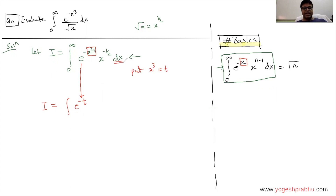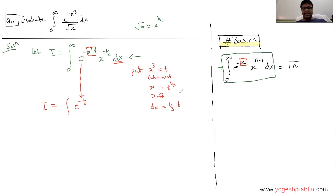We have to change everything — we need to find dx in terms of t. Taking the cube root of x cubed equals t gives x equal to t raised to 1 by 3. Differentiating both sides: dx is equal to 1 by 3 times t raised to 1 by 3 minus 1 dt, which simplifies to dx equals 1 by 3 times t raised to minus 2 by 3 dt.